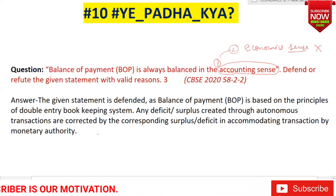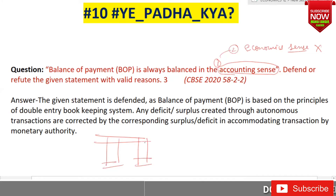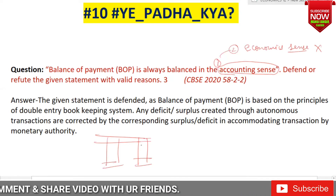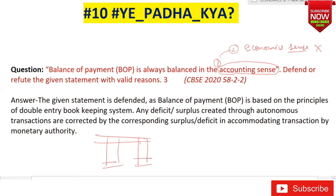I think this will be very easy for commerce students, because whenever they make a T-shaped account, they always know that it is always balanced. So they should understand this better compared to humanities or science students. But I will explain it for science and humanities students as well.